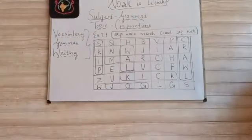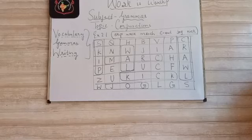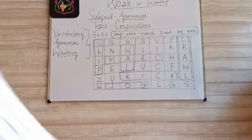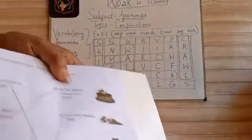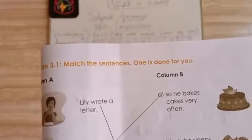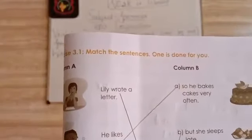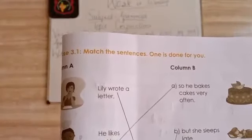Let us do Exercise 3.1 — match the sentences. On both sides, column A and column B, pictures are given and you have to match the sentences. Children, I think you will do it on your own. Now we will do Exercise 3.2 — filling the blanks with the correct conjunctions.